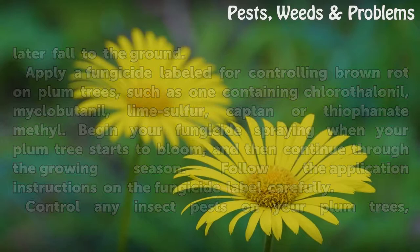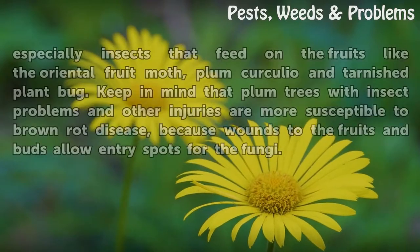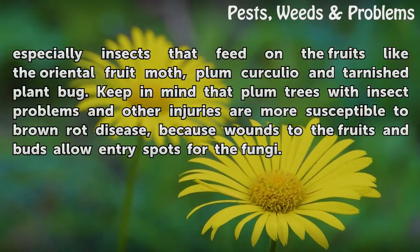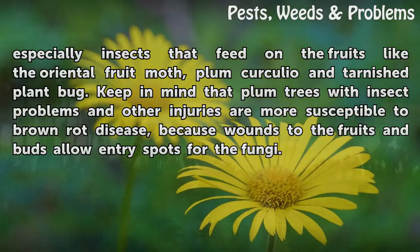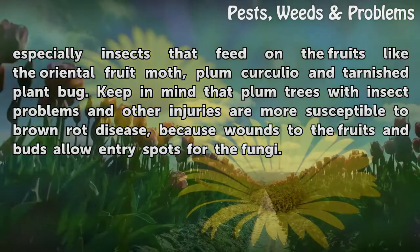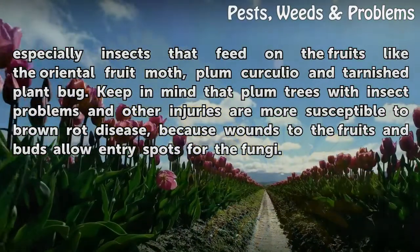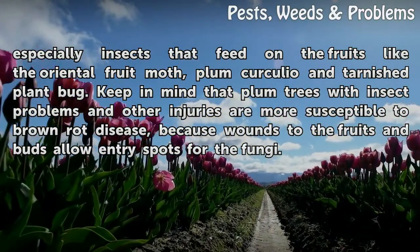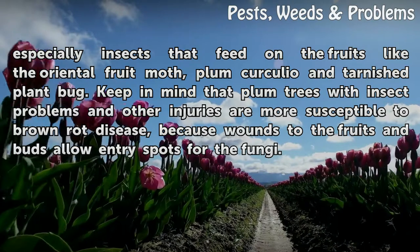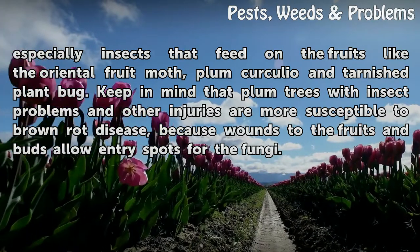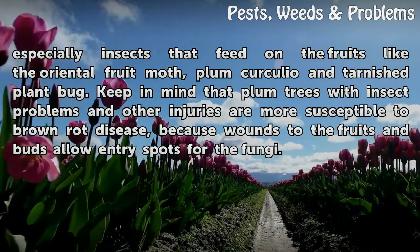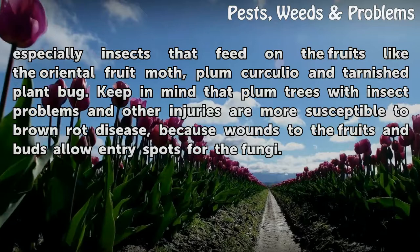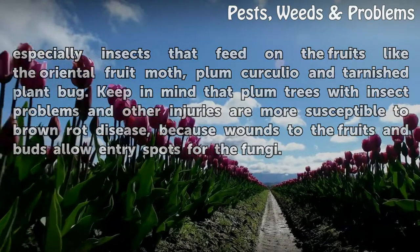Control any insect pests on your plum trees, especially insects that feed on the fruits like the oriental fruit moth, plum curculio and tarnished plant bug. Keep in mind that plum trees with insect problems and other injuries are more susceptible to brown rot disease, because wounds to the fruits and buds allow entry spots for the fungi.